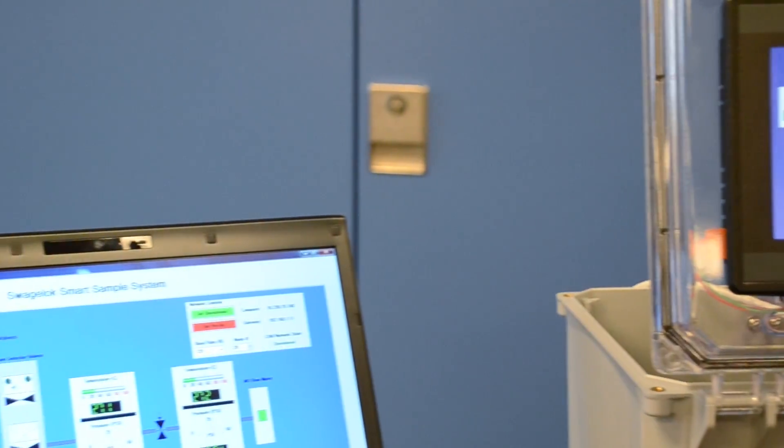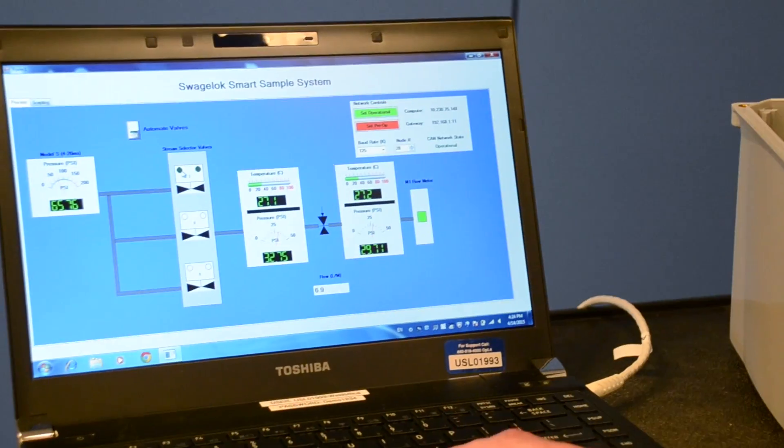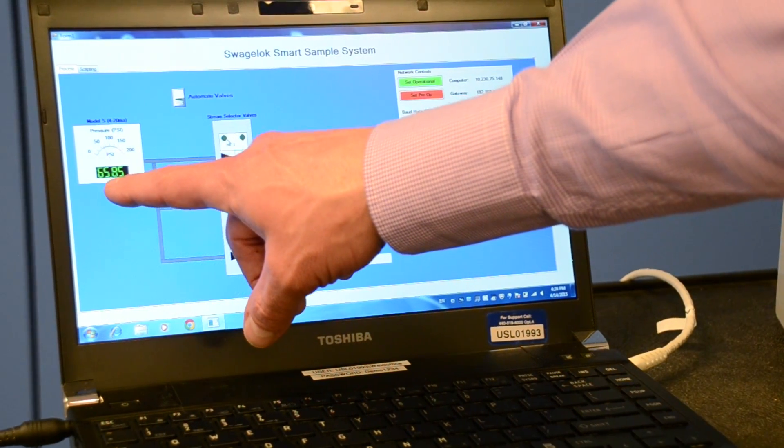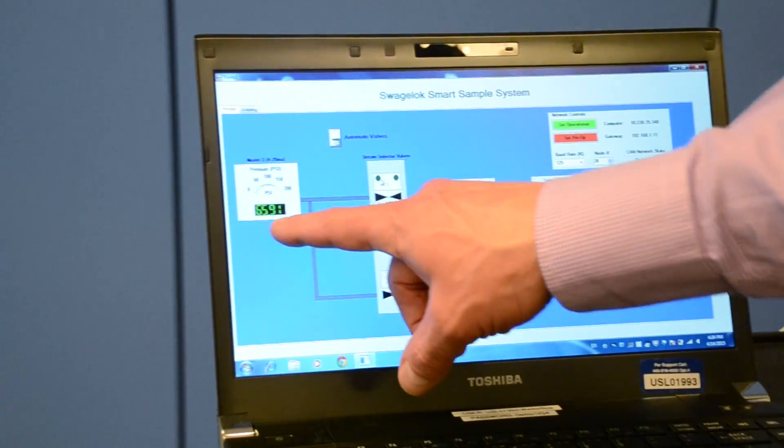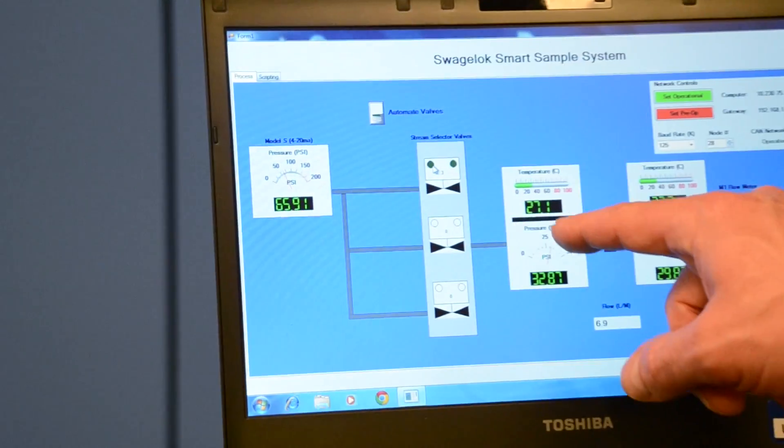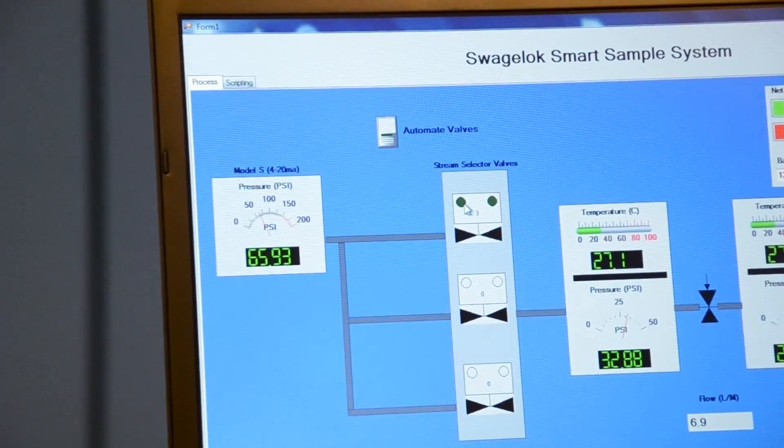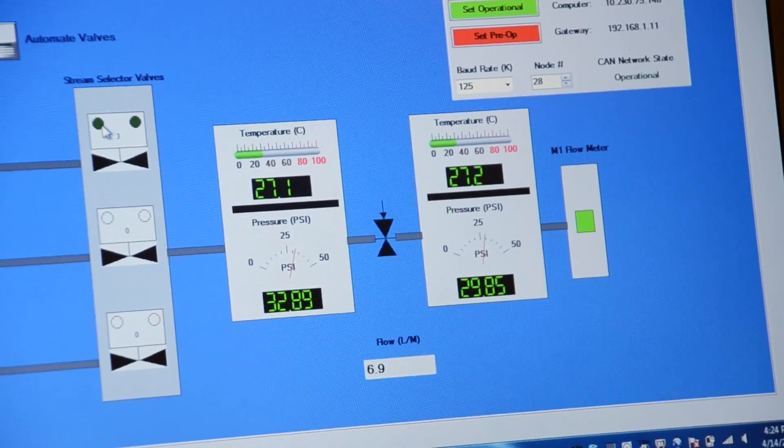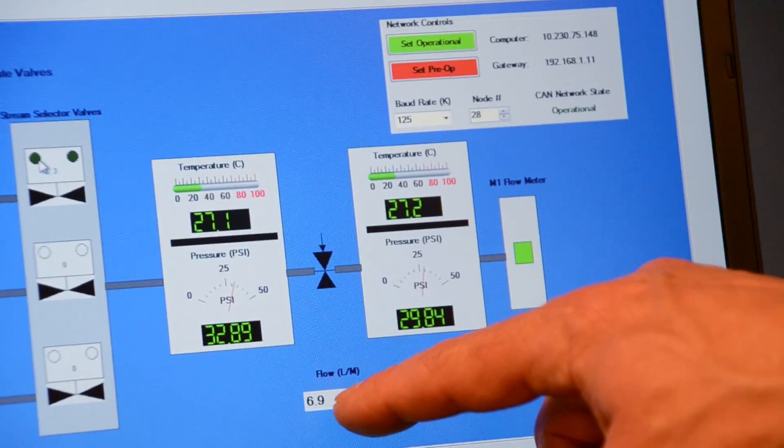Now, as an example of remote control, I'll show you here on this application. A little bit difficult to see, but right there is the inlet pressure from the 4 to 20 milliamp pressure transmitter. Here's your two PTXs, where you have pressure on the bottom, you have temperature on the top. Right there's a measurement of flow.